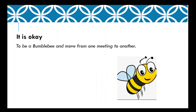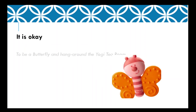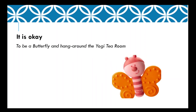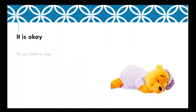A couple of things that are important to take into account. It is okay to be a bumblebee and to move from one meeting to another. It is said that by doing so, we're cross-pollinating ideas from one little group to another. It is also okay to be a butterfly, and that means hanging around in the yogi tea room. And it's even okay to go take a nap.